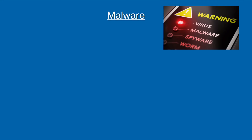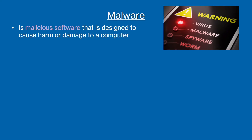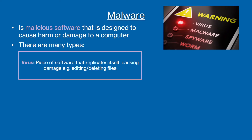Let's start off with malware. Malware is malicious code that is designed to harm a computer, and there are many different forms of malware. The first, and the one you've probably heard of before, is a virus. A virus is a piece of software that replicates itself, causing damage to a computer, e.g. editing, copying, or deleting a file or files.